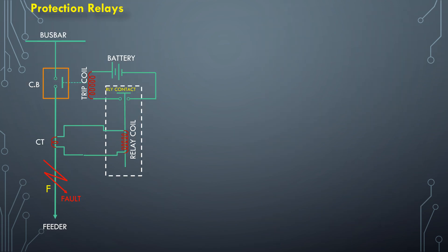A protection relay works by continuously monitoring electrical parameters like voltage and current in a power system. When these parameters deviate significantly from normal ranges, it issues a signal to trip a circuit breaker to effectively isolate the faulty section of the circuit and prevent further damage to the system.